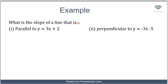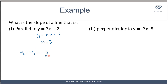Let's use that concept to attempt two questions. Question one: what is the slope of a line parallel to y = 3x + 2? For two lines to be parallel their slopes must be equal. Comparing y = 3x + 2 with y = mx + c, the slope m is equal to 3. So the slope of any line parallel to this line is also equal to 3.